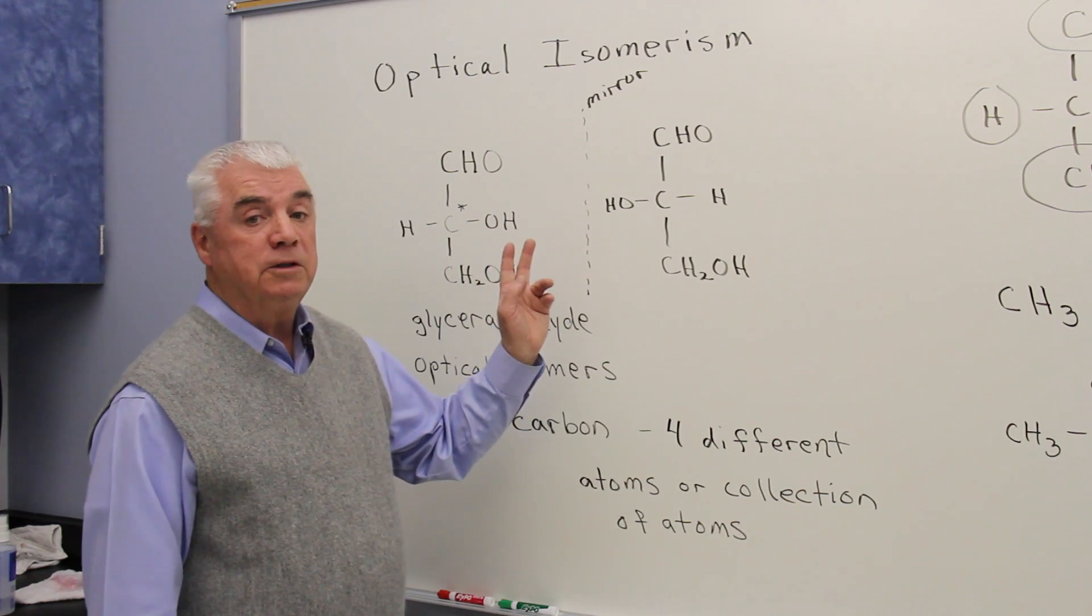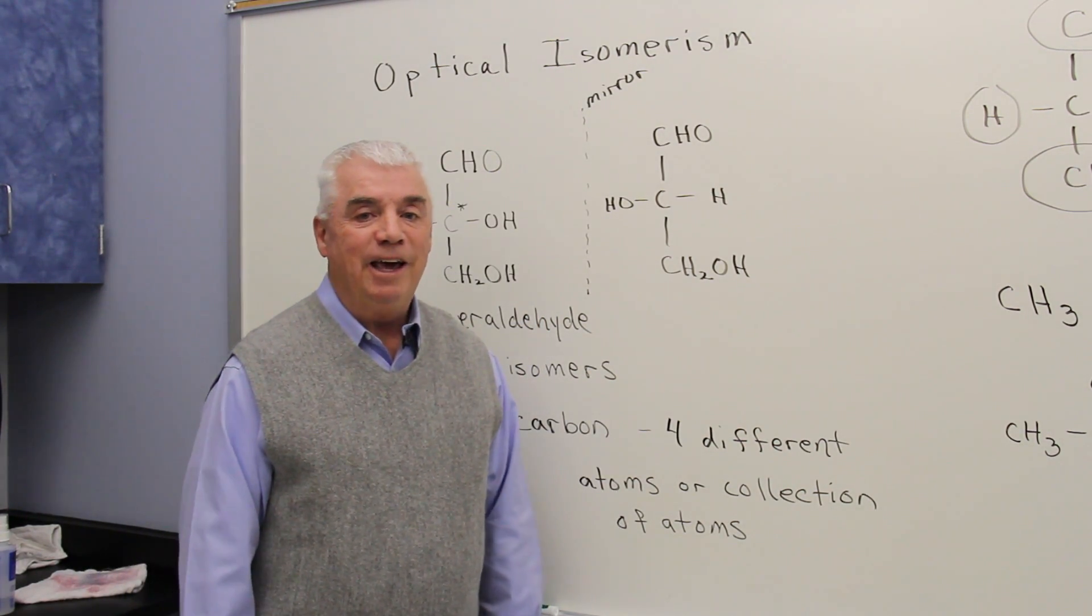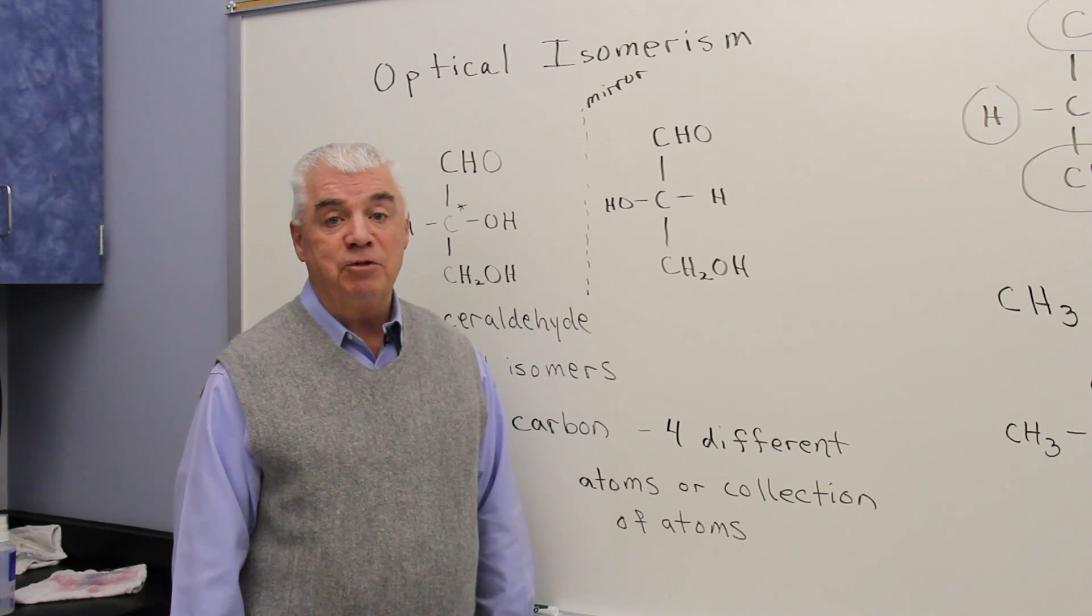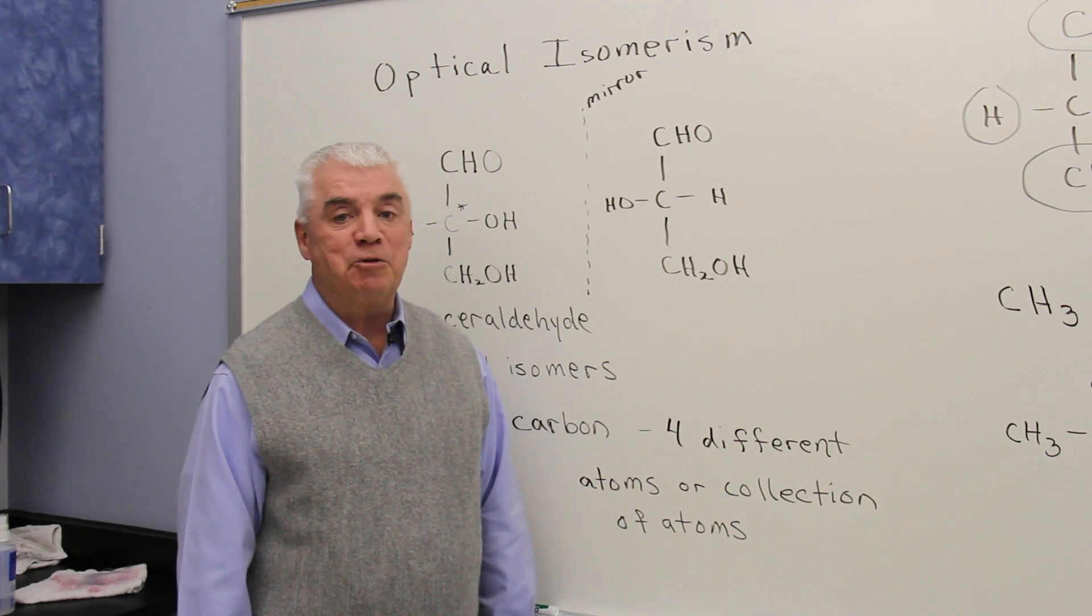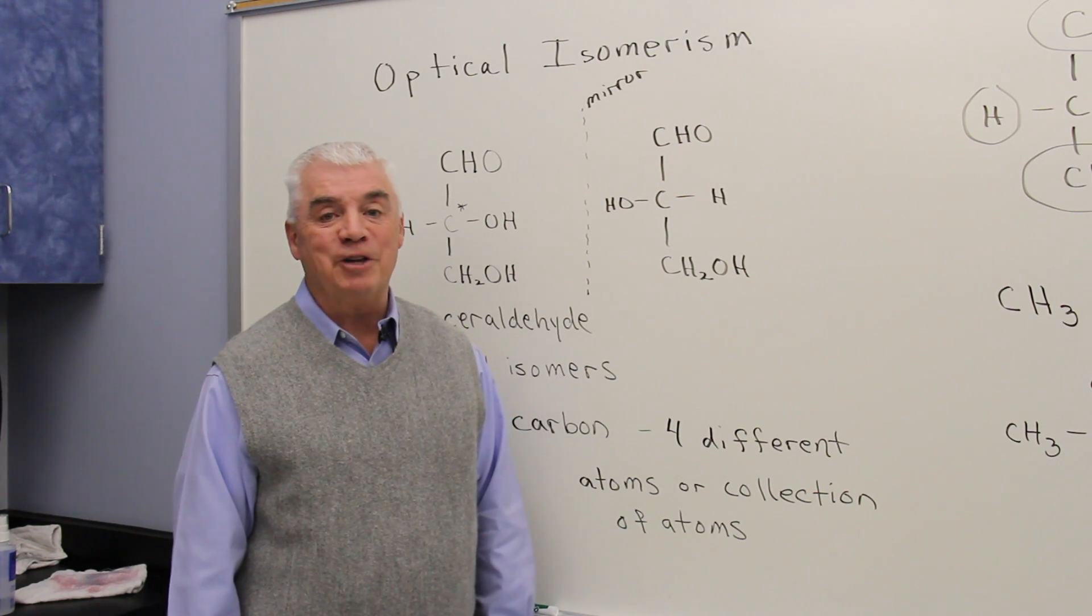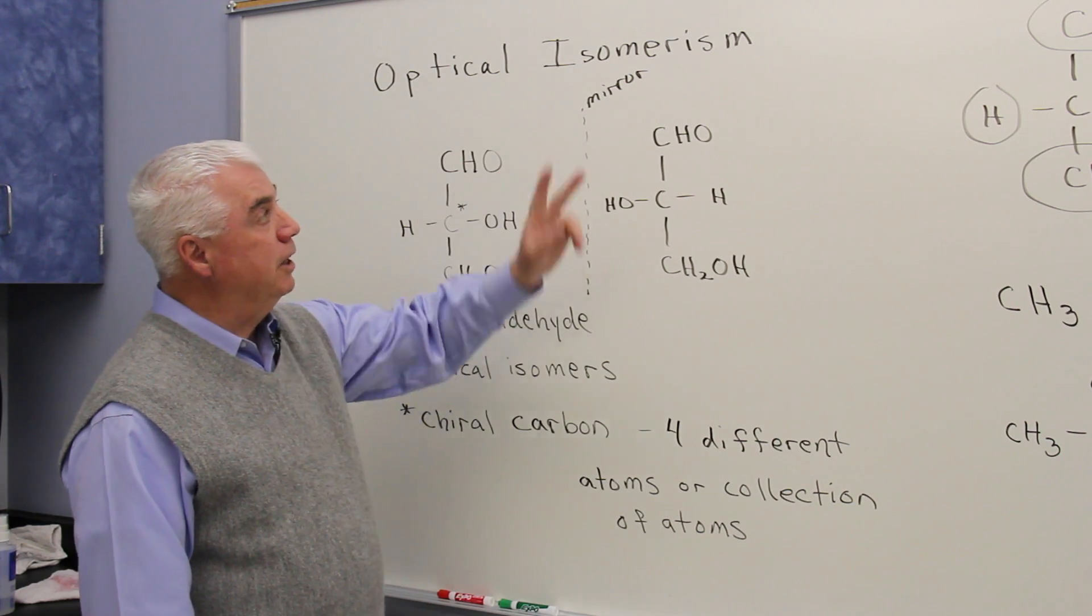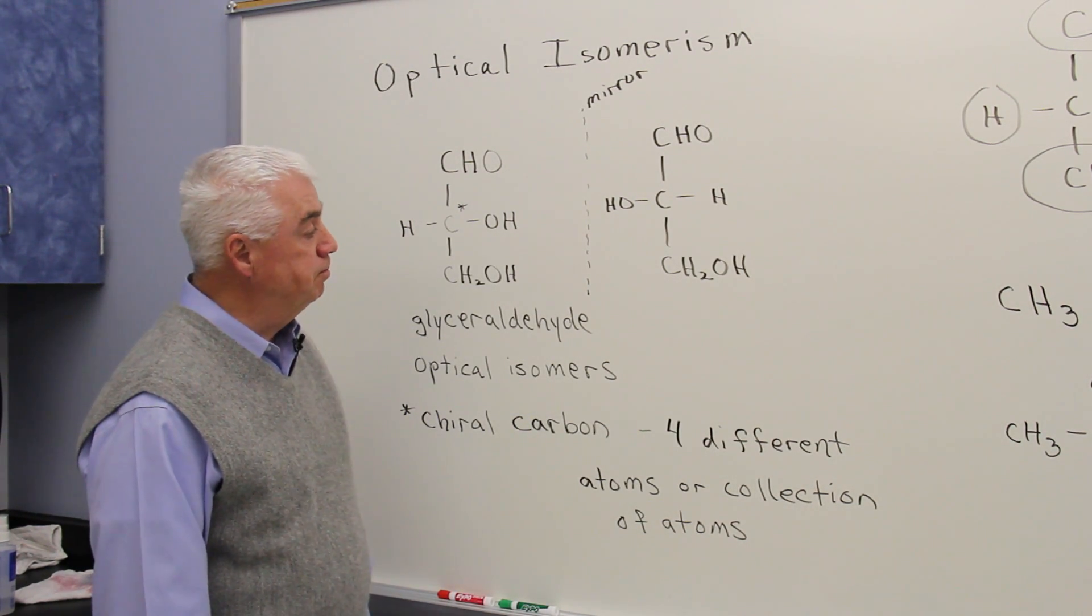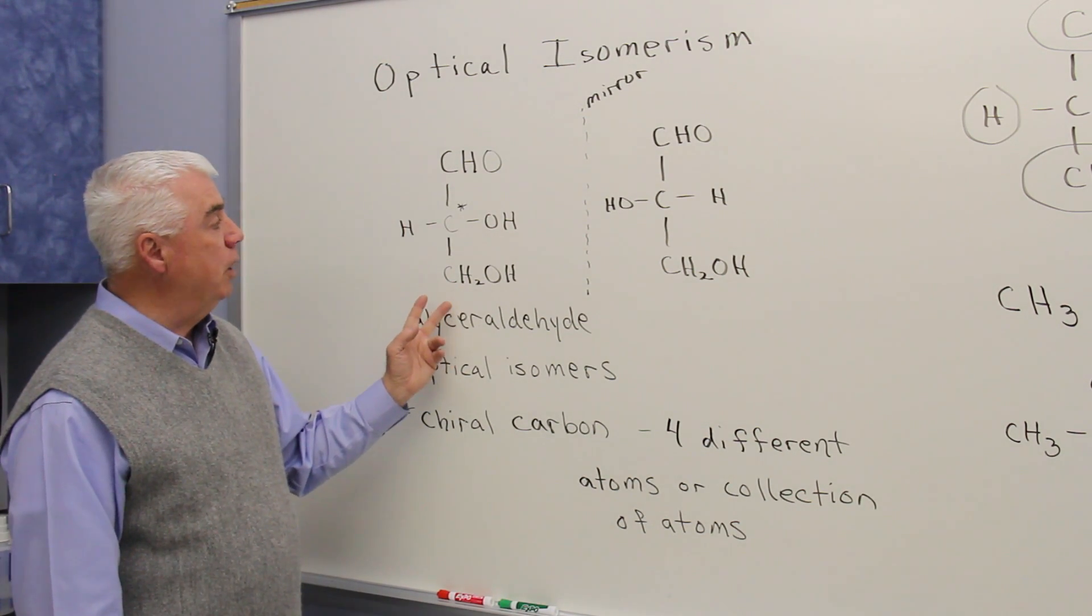One of the important topics in carbohydrate chemistry is that of optical isomerism. If you remember, we introduced structural isomers back in chapter one of organic chemistry, and we also introduced geometric isomerism or cis-trans isomers following that. But here we find an important kind of isomerism called optical isomerism. And it's illustrated by a simple carbohydrate, glyceraldehyde.